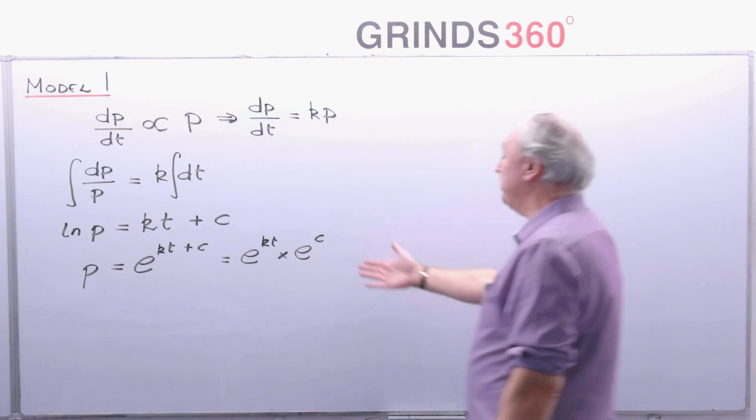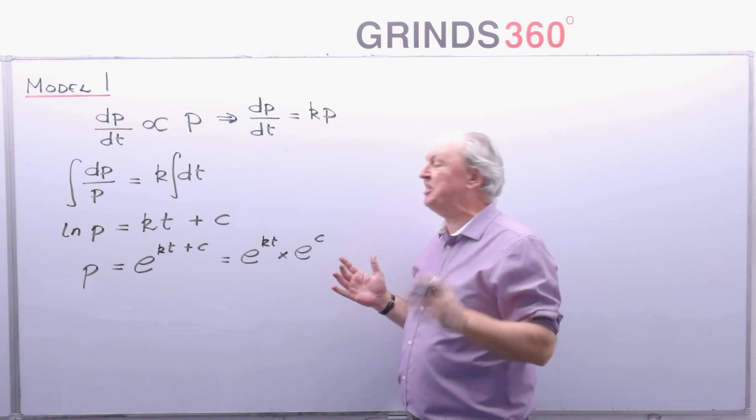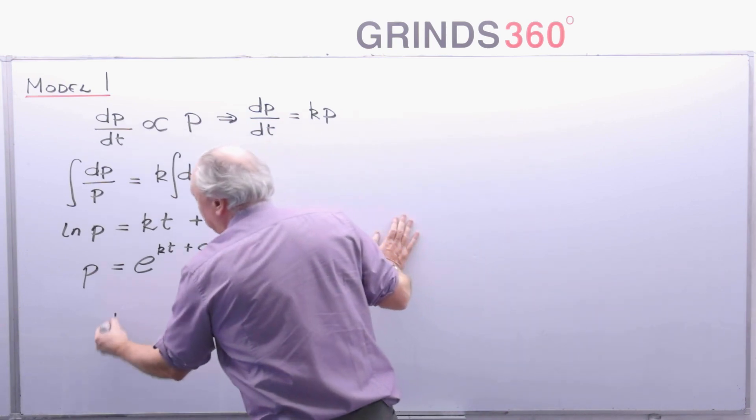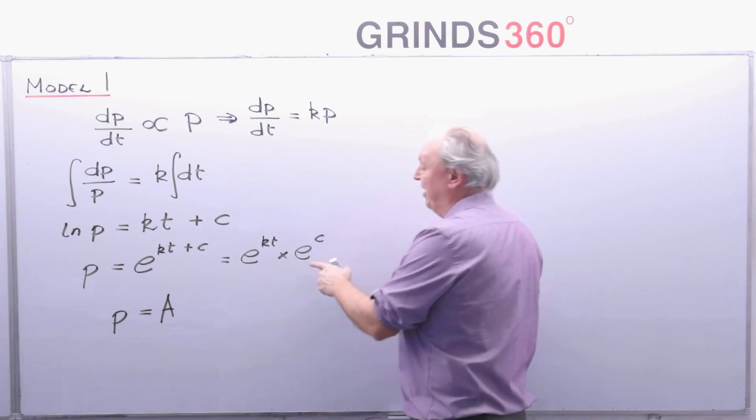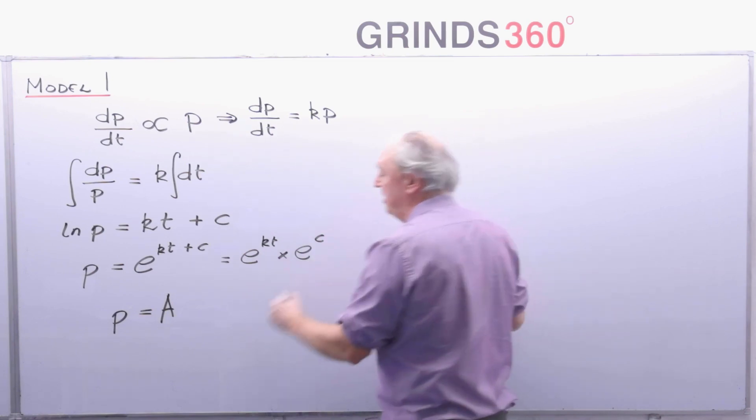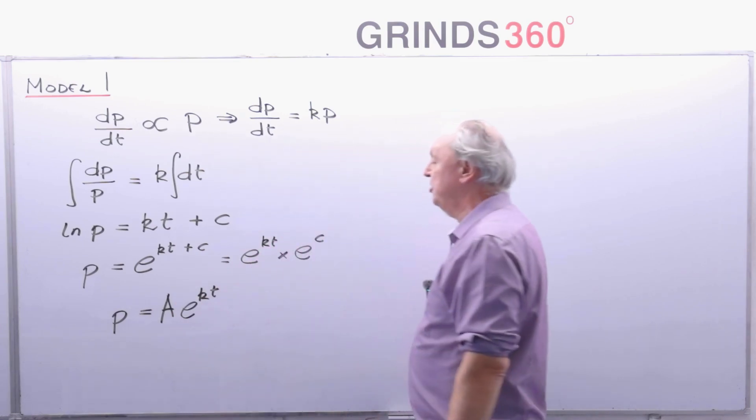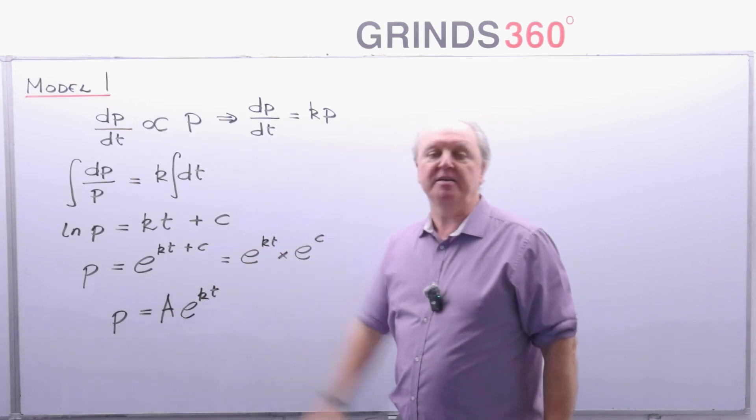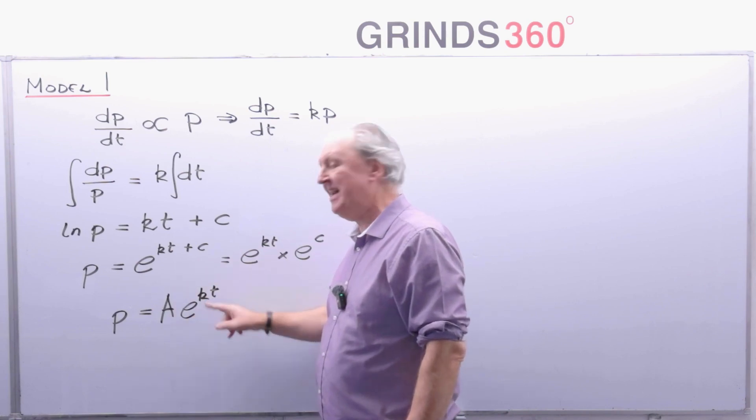Now e to the power of c is some constant. So why don't I bring that into a single constant called capital A. So now I've got p is equal to A times e to the power of kt.